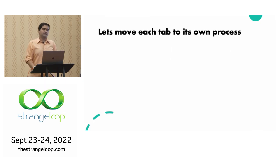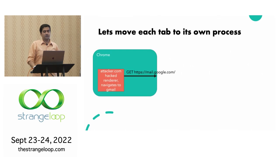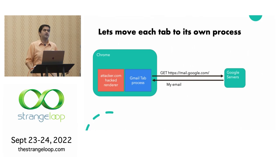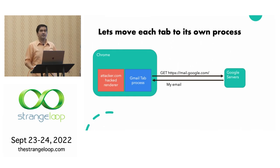So Chrome said: let's move each tab to its own process. If attacker.com hacks the renderer and tries to navigate to Gmail, that navigation is not allowed. The only thing allowed is creating a new process from scratch that's known to be safe, then doing the navigation request to mail.google.com. This way you're guaranteed that navigating to sensitive sites like Gmail is always safe — you're not going to run untrusted stuff on Gmail.